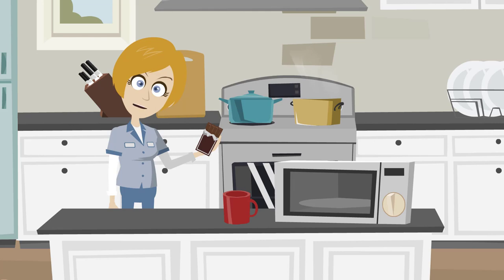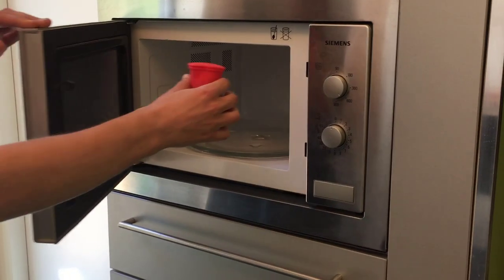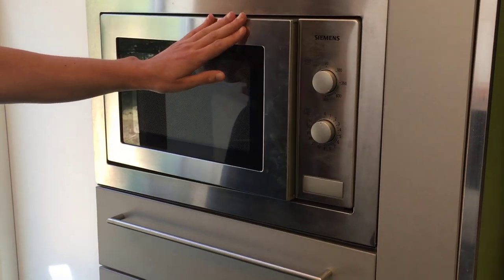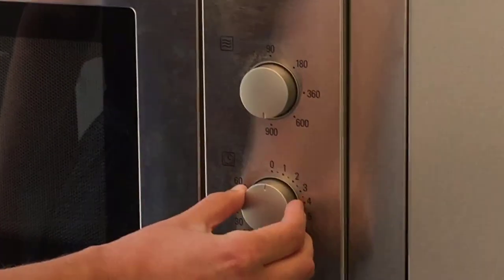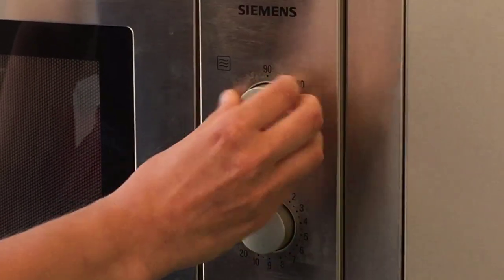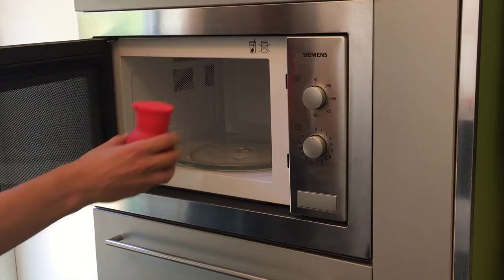First, we'll need to melt the chocolate. Here, we have used a silicone cup to melt the chocolate in a microwave oven, but be careful, it's possible to burn chocolate, so we're using short bursts in the microwave, checking between each burst to see if the chocolate has melted.